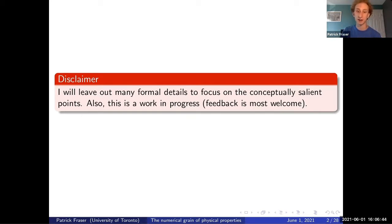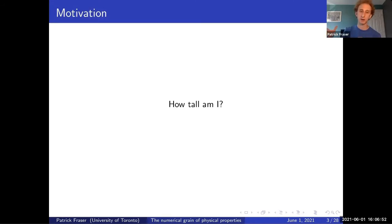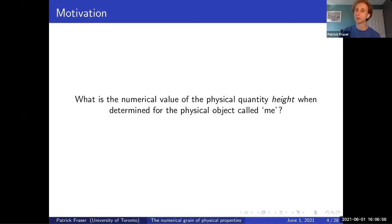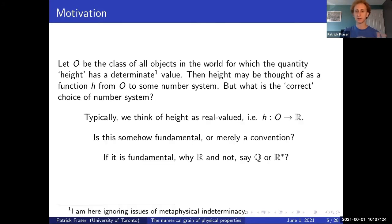A motivating question: how tall am I? To put it more suggestively, what is the numerical value that the physical quantity height has when determined for the physical object called me? We've got some object in the world, we believe it instantiates a quantity called height, and we're querying the world to figure out the value of that property. The general approach is to talk about a class of objects that have some quantity with a determinate value, setting aside all issues of metaphysical indeterminacy.